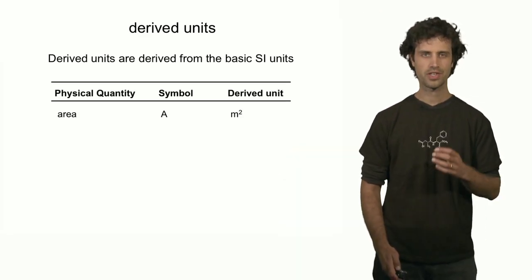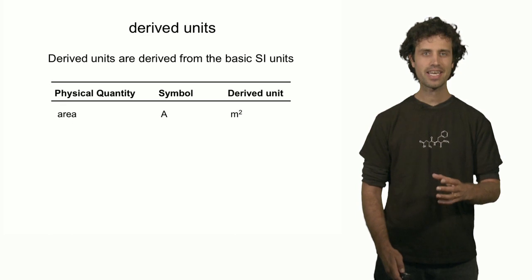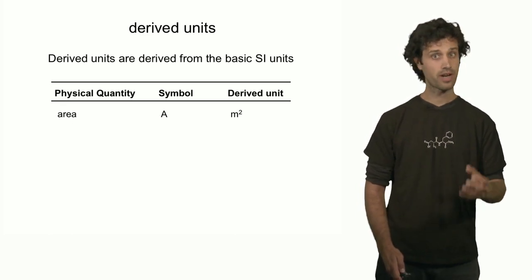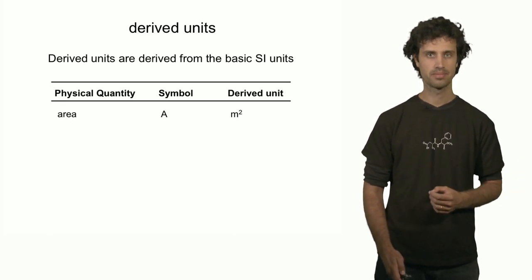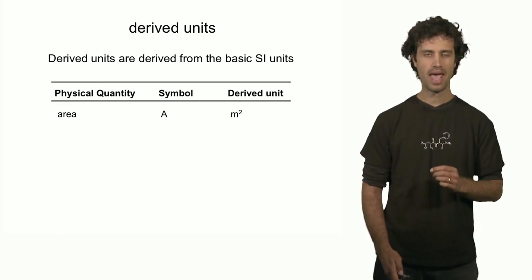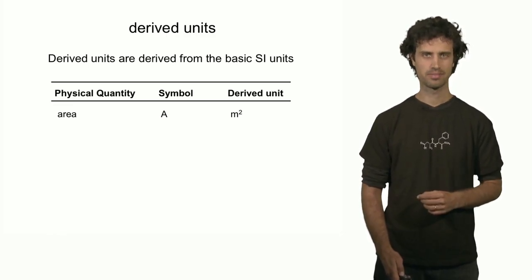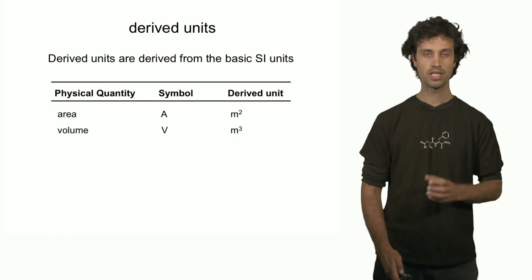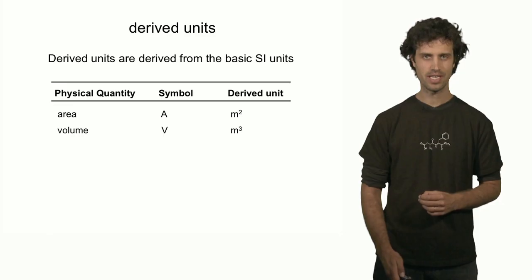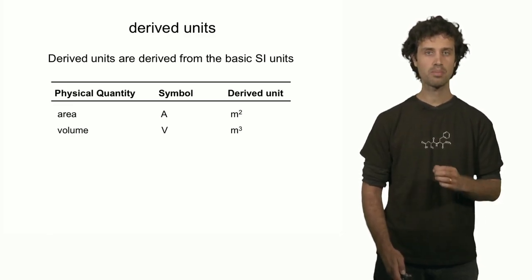The first derived quantity is area, indicated by capital A. The unit for area is derived from the unit of length, the meter. The unit of area is the square meter, or m to the second. Volume is also derived from the quantity of length, indicated by a capital V. The unit of volume is the cubic meter, or m to the third.